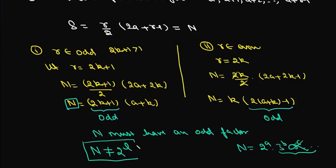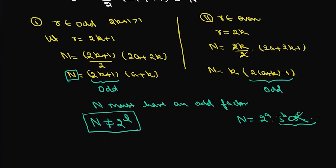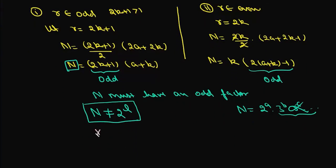We have proved that if n can be expressed as a sum of r consecutive positive integers, then n cannot be of the form 2 to the power l. Now if n is not of the form 2 to the power l, it has at least one odd factor and can be expressed as 2 to the power l times m, where m is an odd number greater than 1. We now need to prove that any number of the form 2 to the power l times m, where m is odd and greater than 1, can be expressed as a sum of r consecutive integers.